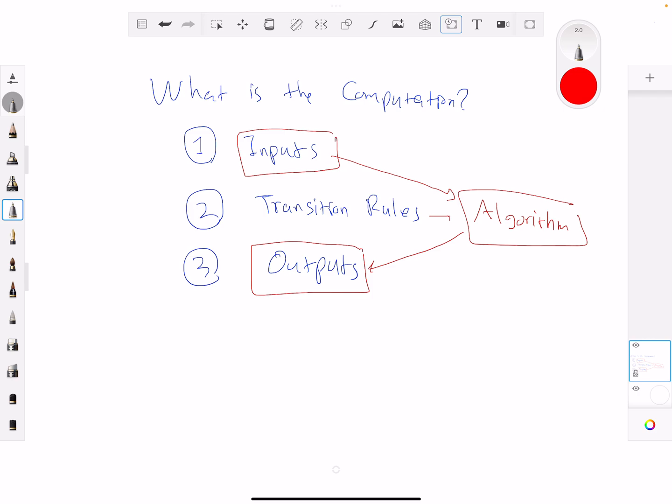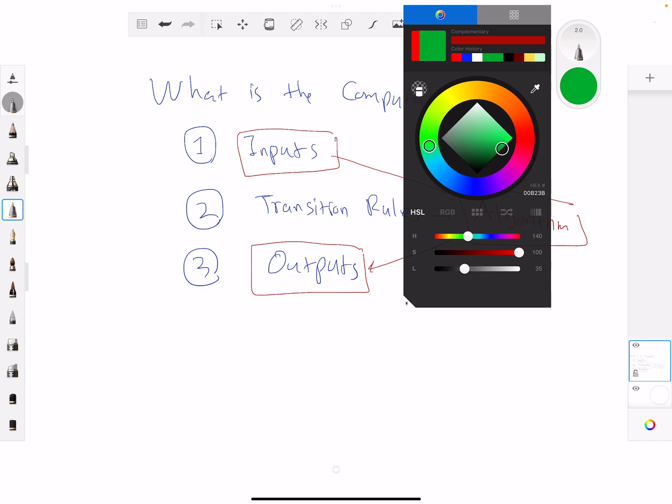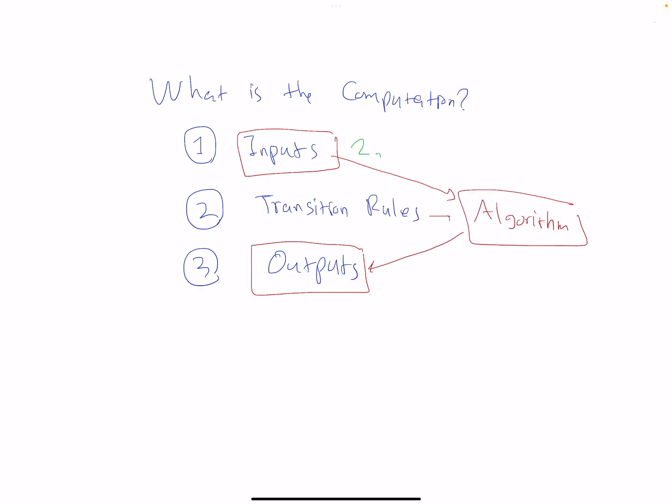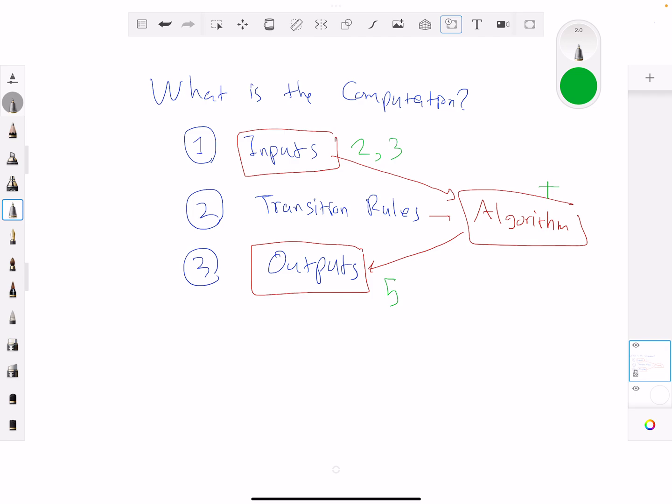In the past, people used mechanical devices to do computation. For example, they invented the Abacus and other mechanical devices for computation. In the Abacus, you can add two digits by using the mechanical device. In this example, the inputs are two and three, the algorithm is summation, and the output is five. So the Abacus input is two representations of two digits, the algorithm sums them, and we have the result five.